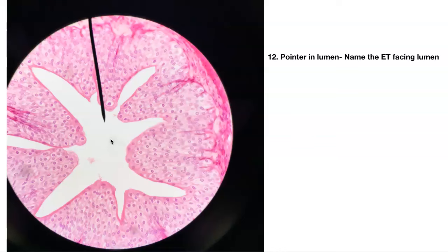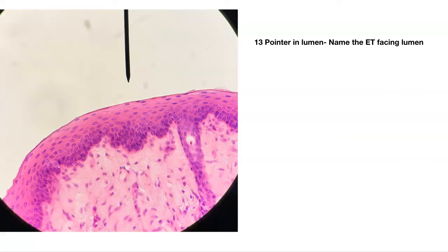You're going to be seeing a lot of slides that are just repeats of the same epithelial tissue type. I just want you to see it multiple times on multiple different pictures until you finally go, I got it. Number thirteen — name that epithelial tissue facing the lumen. Make sure you're specific with this one.